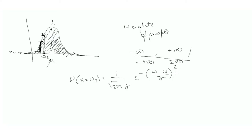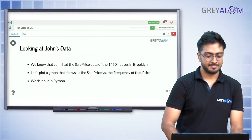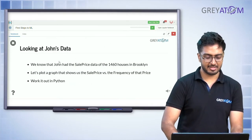The probability that x equals w2 is given by 1 over root(2pi) times sigma, times exponential of negative (w minus mu) over sigma, squared. If you know mu and sigma, you can calculate the probability of any particular weight w2. Taking all weights from minus infinity to plus infinity and summing them should equal exactly one.